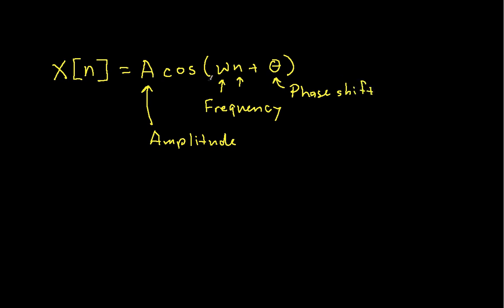And what this does is it basically takes a cosine waveform of a given frequency, this is a radian frequency, and it gives us samples spaced at every integer.